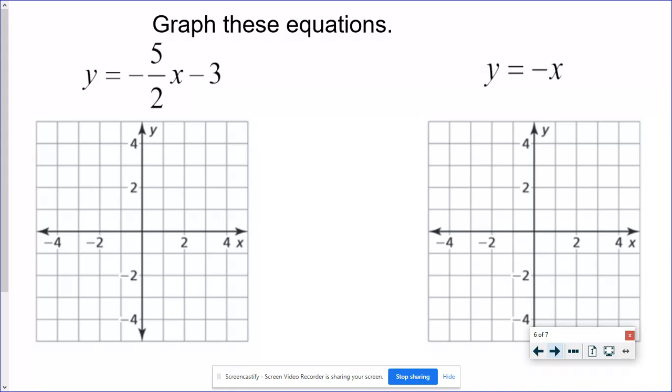All right. For the first example in this slide, now we've got a bunch of negative stuff. Okay. So my slope is going to be negative five over two. And my y-intercept, here you want to be careful. Don't lose it. That's a negative. The y-intercept is negative three.